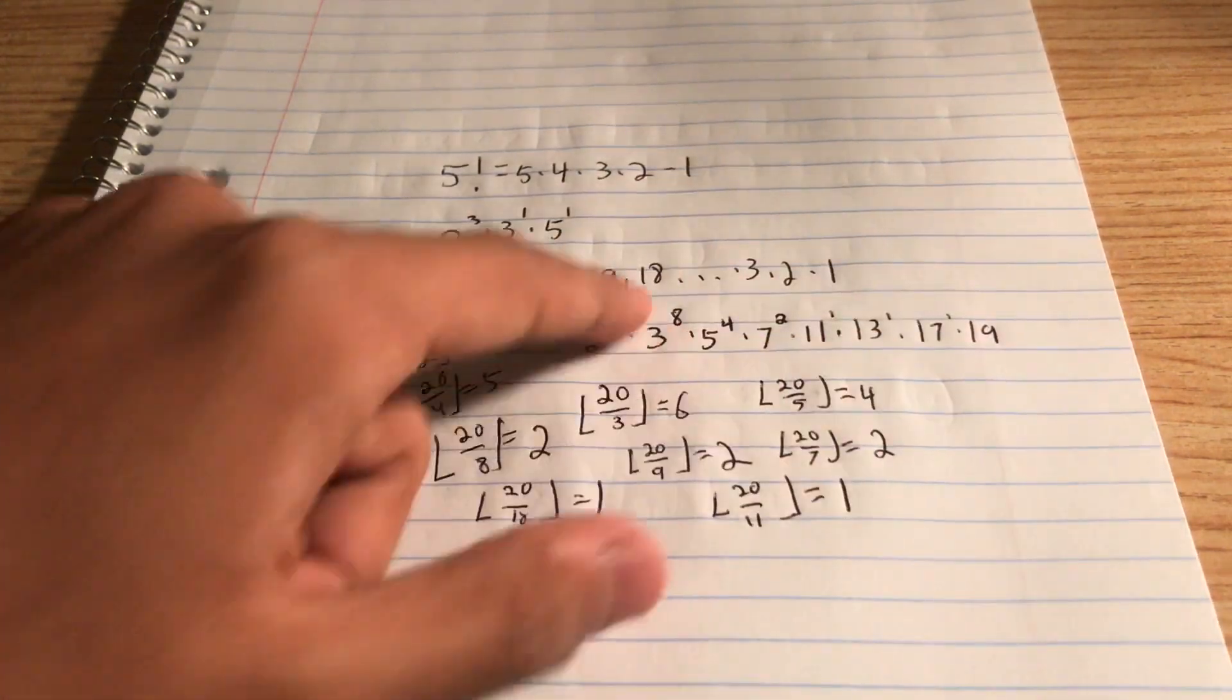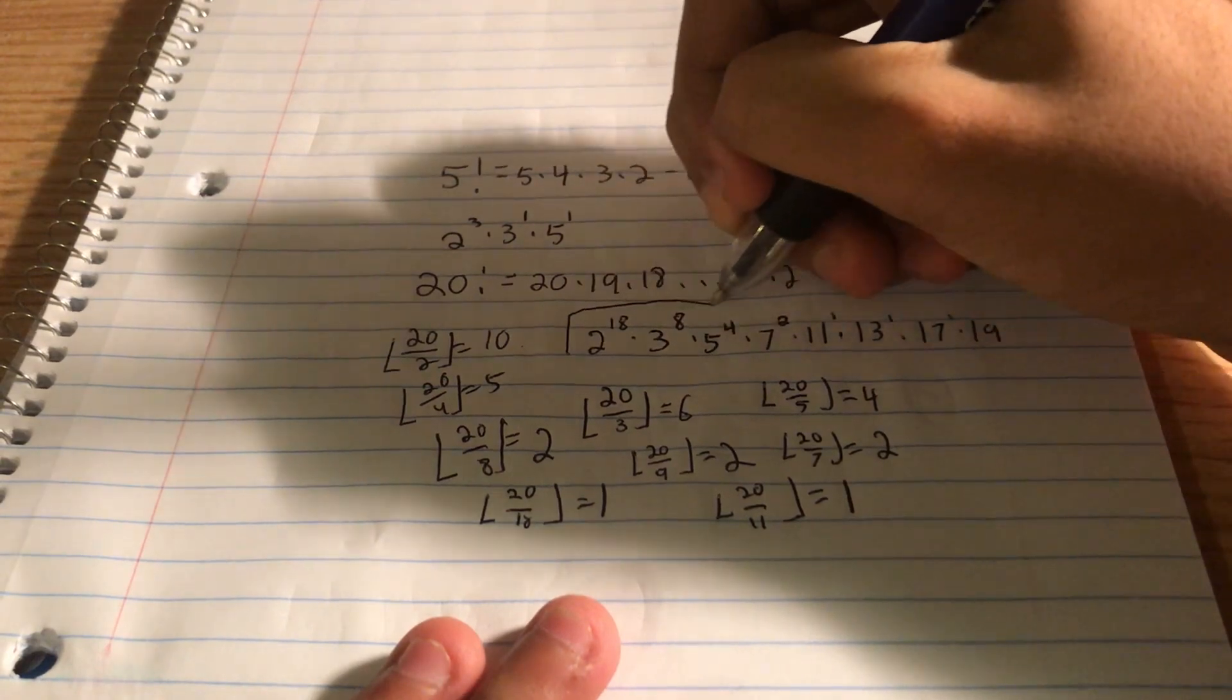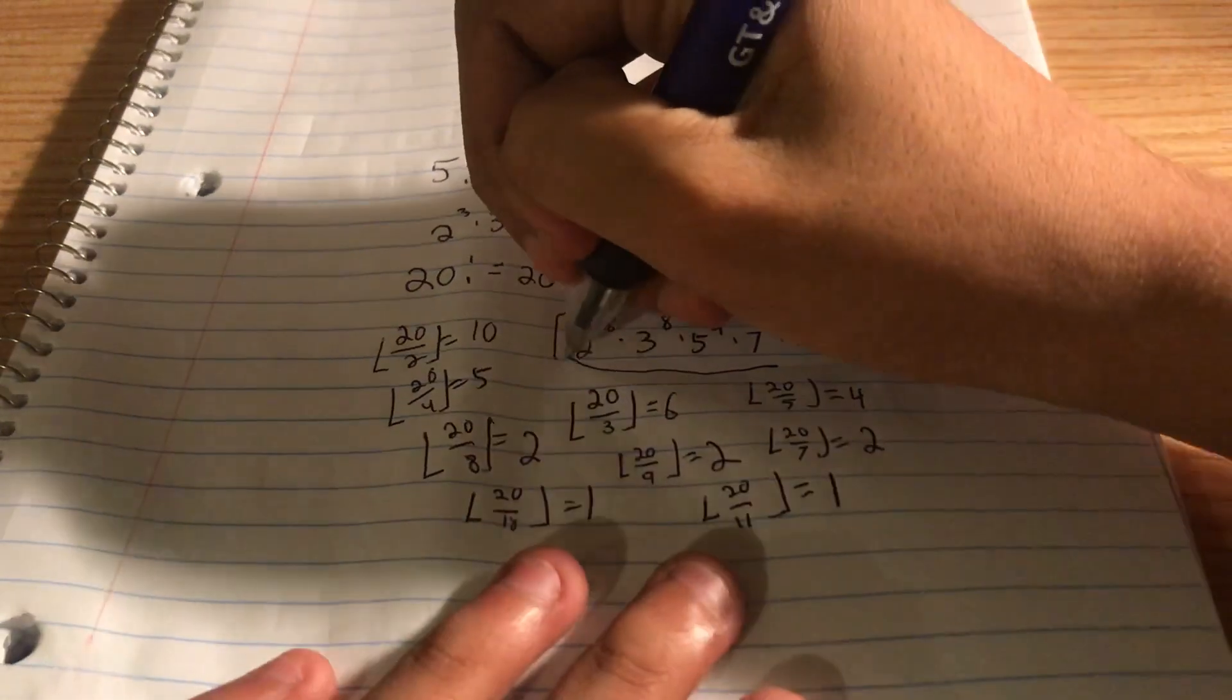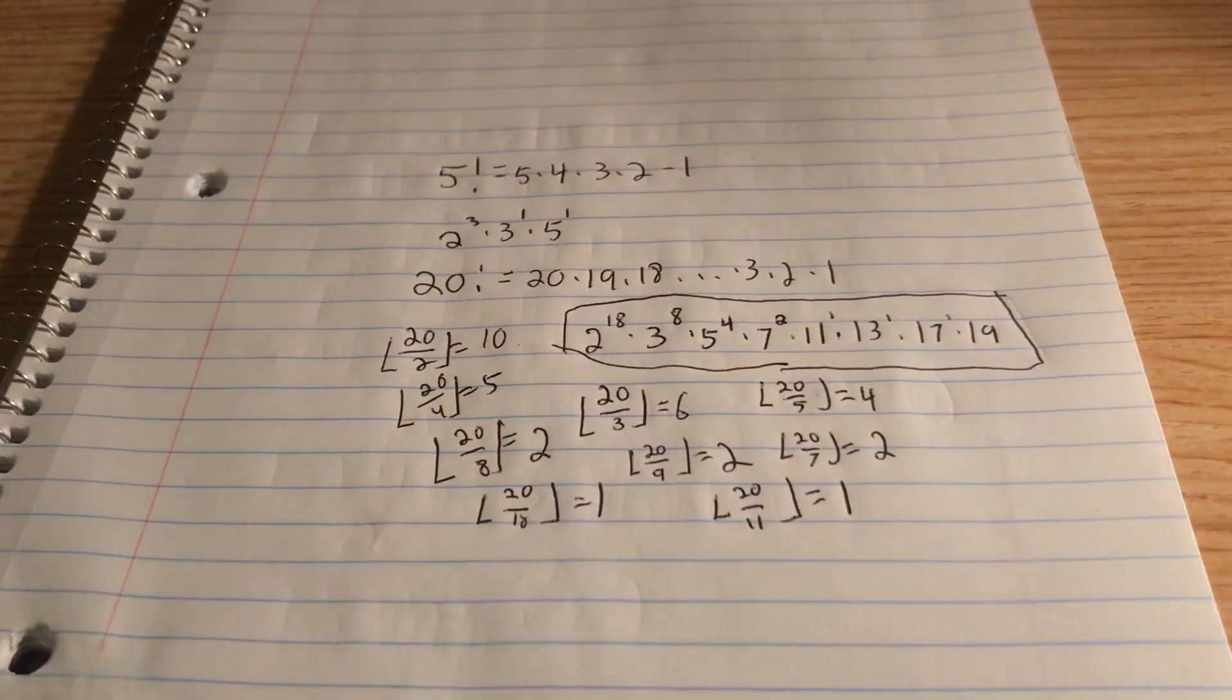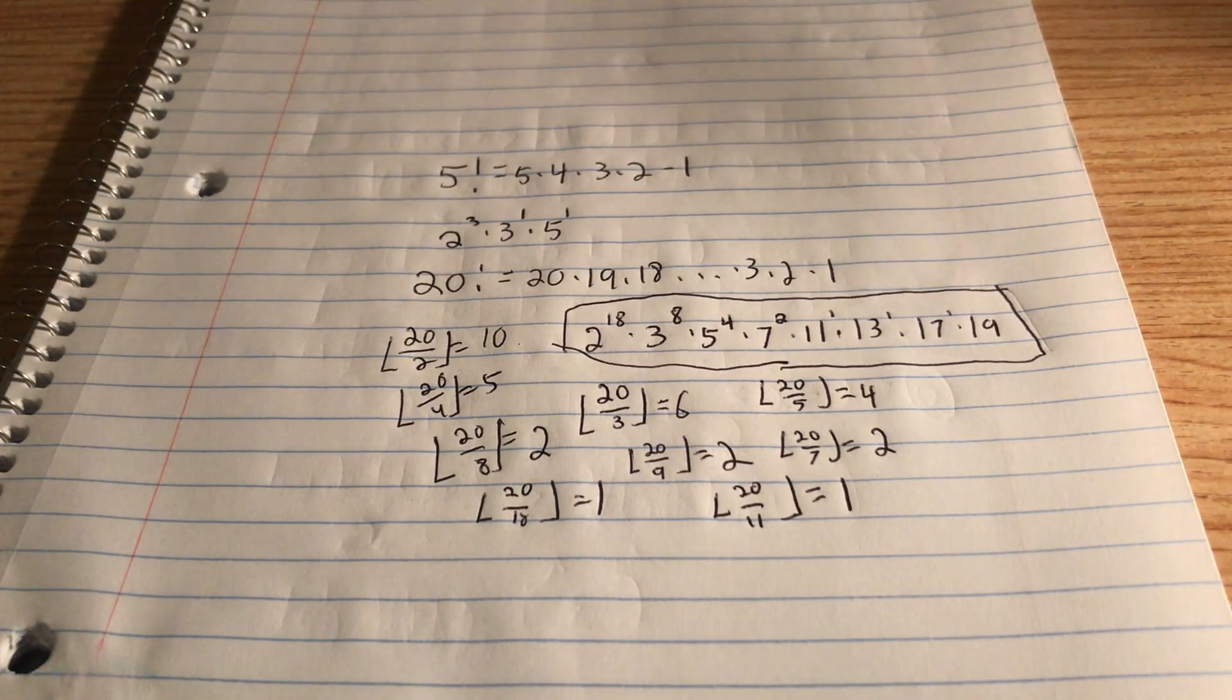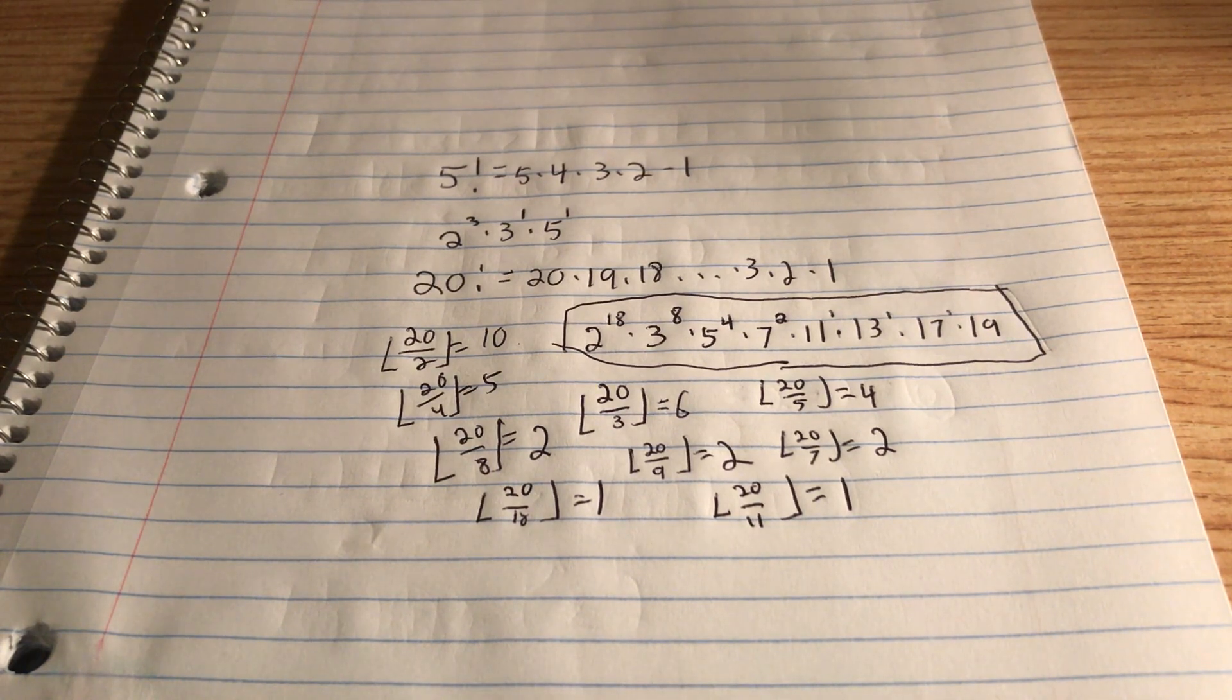This is our whole prime factorization. 2 to the 18 times 3 to the 8th times 5 to the 4th times 7 squared times 11 times 13 times 17 times 19. And there we have it. So it's a bit confusing at first. It definitely was for me. But once you do more and more contest math problems, it gets a lot easier. So have a nice day.